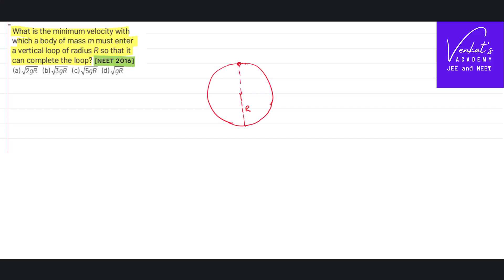Say the body is moving in an anti-clockwise direction. At the top it has a velocity v-top. This is a string which always carries tension towards the point of suspension. This body also has weight mg, which always acts in the downward direction.